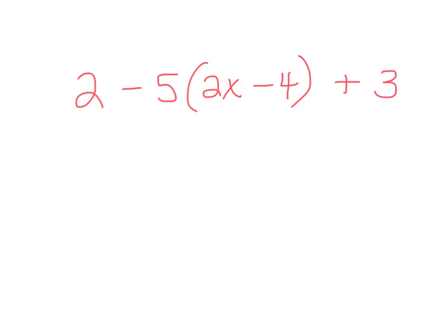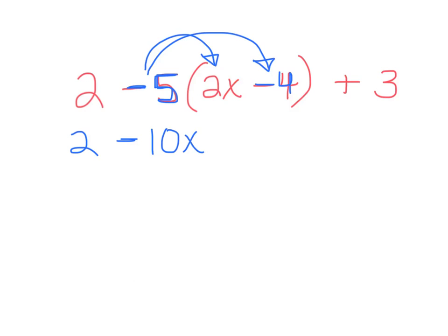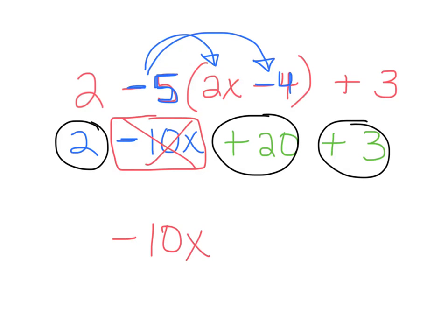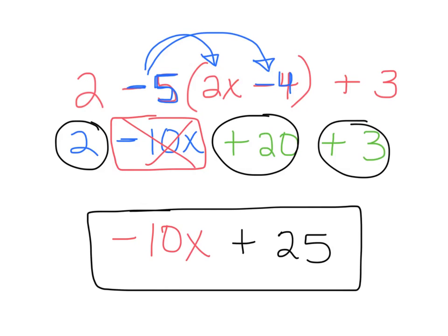One more: 2 minus 5 times (2x minus 4) plus 3. Keep the 2. Think of that minus sign as negative 5. Negative 5 times 2x — a negative times a positive is negative — so I write minus 10x. Inside, negative 4 means I do negative 5 times negative 4, which is positive 20. Then plus 3. Checking like terms: there are no other x's, so just negative 10x. Then 2 plus 20 plus 3 equals 25. Final answer: negative 10x plus 25. We're mostly focusing on positive ones, but I wanted to show a couple negative examples too.